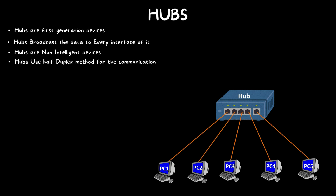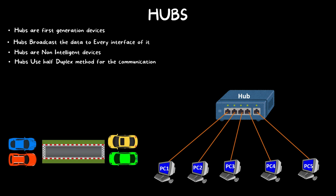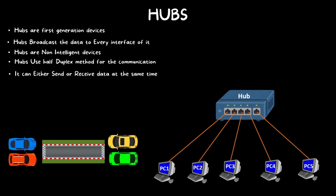Hubs use half-duplex mode for communication. Half-duplex means one device can either send or receive data at a time — not both simultaneously. We can consider a network hub as a single-track road: at a time, only one car can travel in one direction. It is not possible for two cars to travel in opposite directions at the same time because there is only a single track. Similarly, a hub can either send or receive at a time, but cannot do both simultaneously.